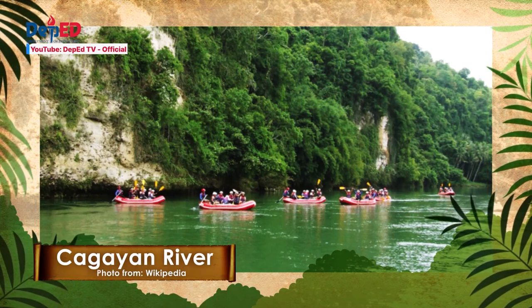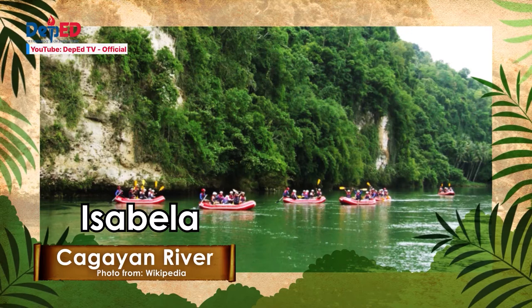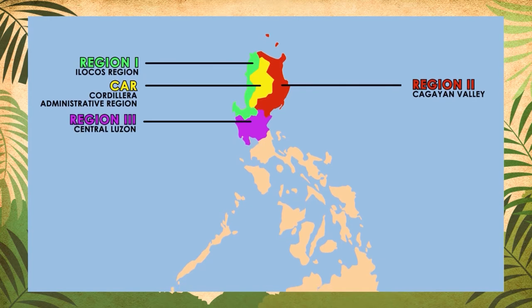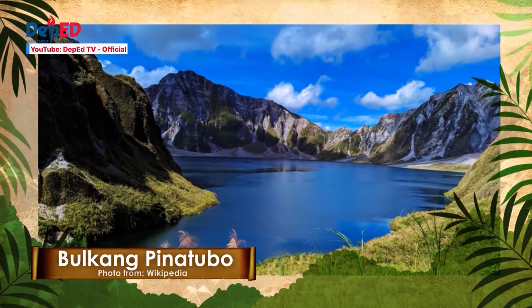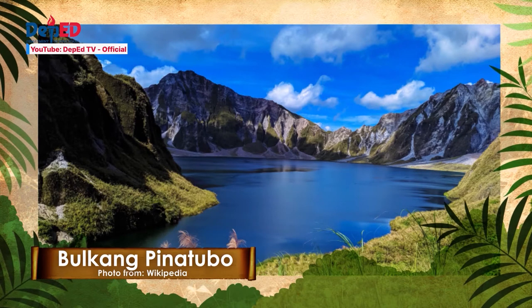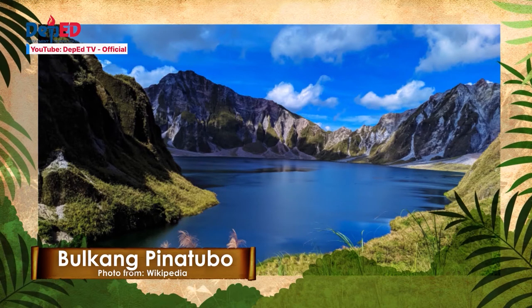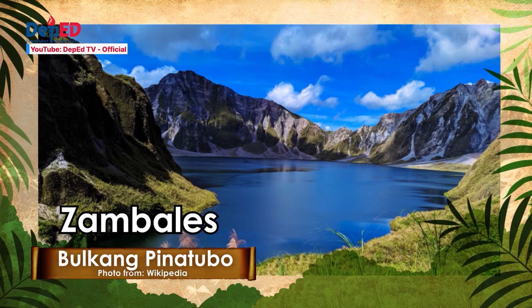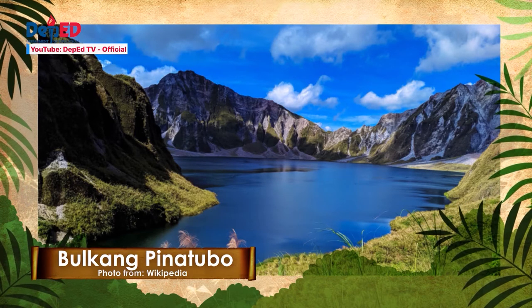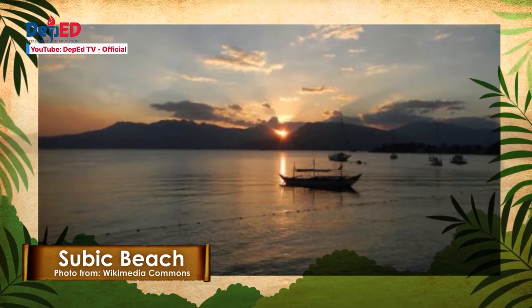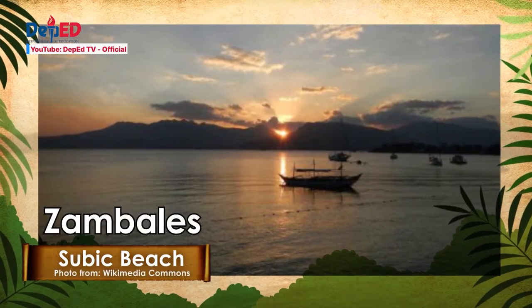Ang pinakamahabang ilog sa Pilipinas ay ang Ilog Cagayan, kilala din sa tawag na Rio Grande de Cagayan. Ito ay nasa Region 2, at dumadaan sa lalawigan ng Nueva Vizcaya, Quirino, Isabela at Cagayan. Tayo ay nasa Region 3, Central Luzon, kung saan matatagpuan ang Bulkang Pinatubo, ang nag-iisang aktibong bulkan sa rehyon. Noong 1991, naganap ang matinding pagsabog ng Bulkang Pinatubo na nagdulot ng matinding pinsala sa Pampanga, Tarlac at Zambales. Pero makalipas ang ilang taon ay muling nakabawi ang mga tao sa lalawigan. Nandirito rin sa Region 3 ang dinarayong Subic Beach na sa lalawigan ng Zambales rin makikita.